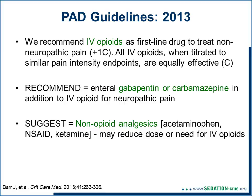When it comes to treating pain, we recommend IV opioids as the first-line drug. We do not identify a specific IV opioid, as they are relatively equivalent, and leave it to the bedside clinician to select based on the patient's specific circumstances such as hemodynamic instability, renal dysfunction, or QTc prolongation. We also recommend non-opioid medications like gabapentin or carbamazepine for neuropathic pain, and analgesics like acetaminophen, non-steroidal agents, or ketamine to reduce the need for IV opioids.